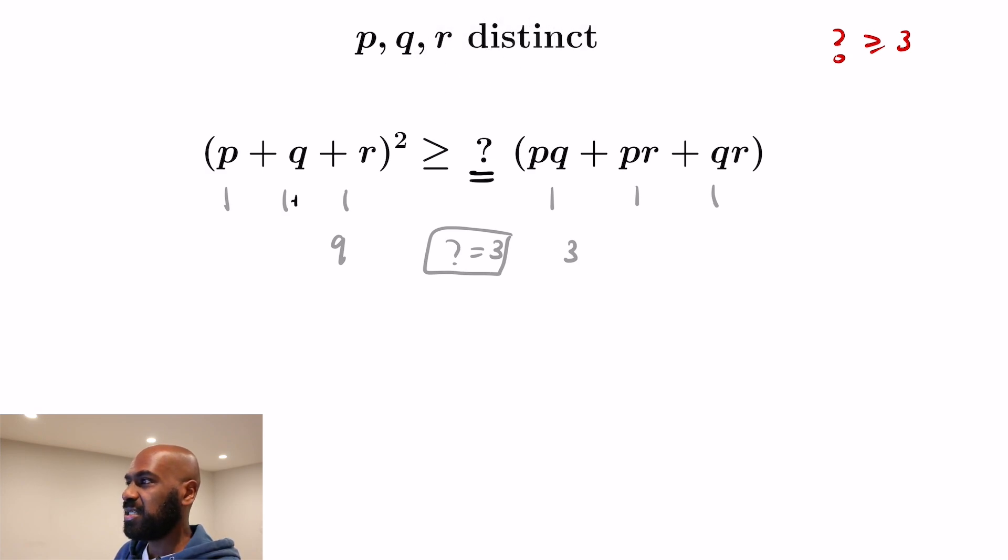But we have the fact that things are distinct. So one way to handle something like this is to slightly perturb the entries. So we'll add just a little bit to Q and subtract that same little bit from R and analyze what happens in that situation. On the left hand side we'll get still that P+Q+R is 3, and so we get 9 on the left hand side when we square. Whereas on the right hand side we get 1·(1-ε), and then 1·(1+ε), and then (1-ε)·(1+ε).